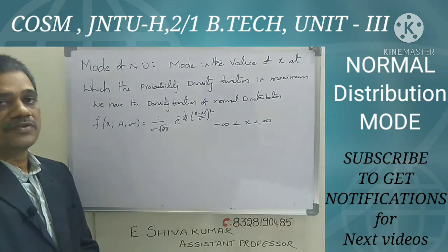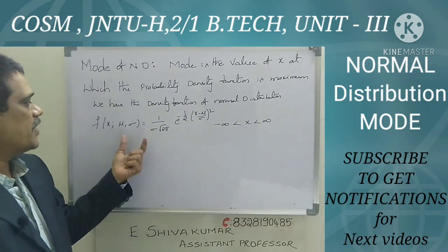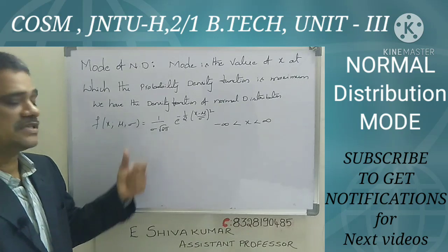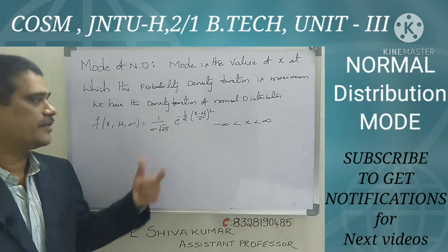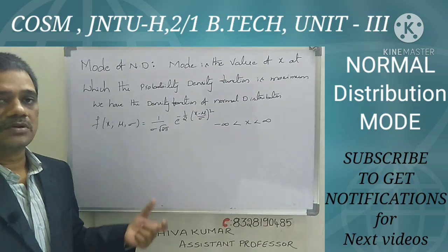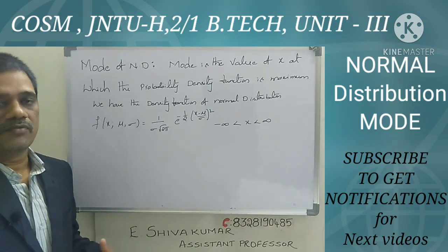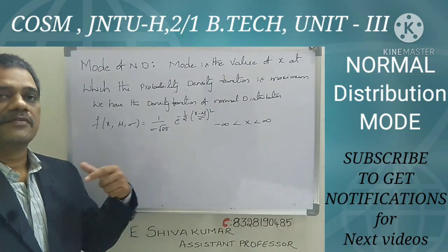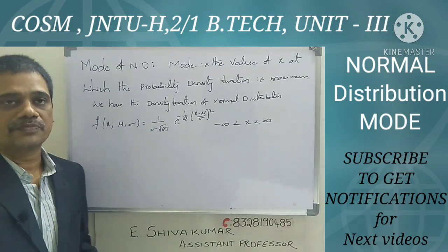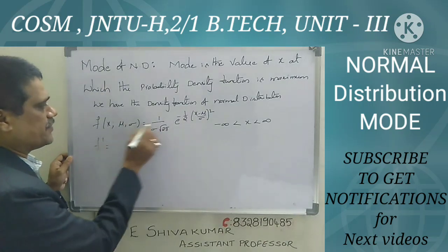By the definition of mode, I can find the maximum value of this function. The process of finding the maximum value is: first, find the derivative of this function and equate it to zero. You will get some point x, and at that point we check whether the function acts as a maximum or minimum value.